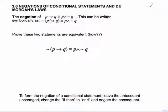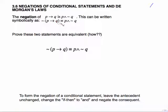The negation of the conditional is this conjunction. It may sound kind of odd that the negation of a conditional actually turns into a conjunction, but that's what it is. It can be written symbolically as the negation of parentheses — the if-then — is equivalent to P and not Q. Remember the three lines mean equivalent.